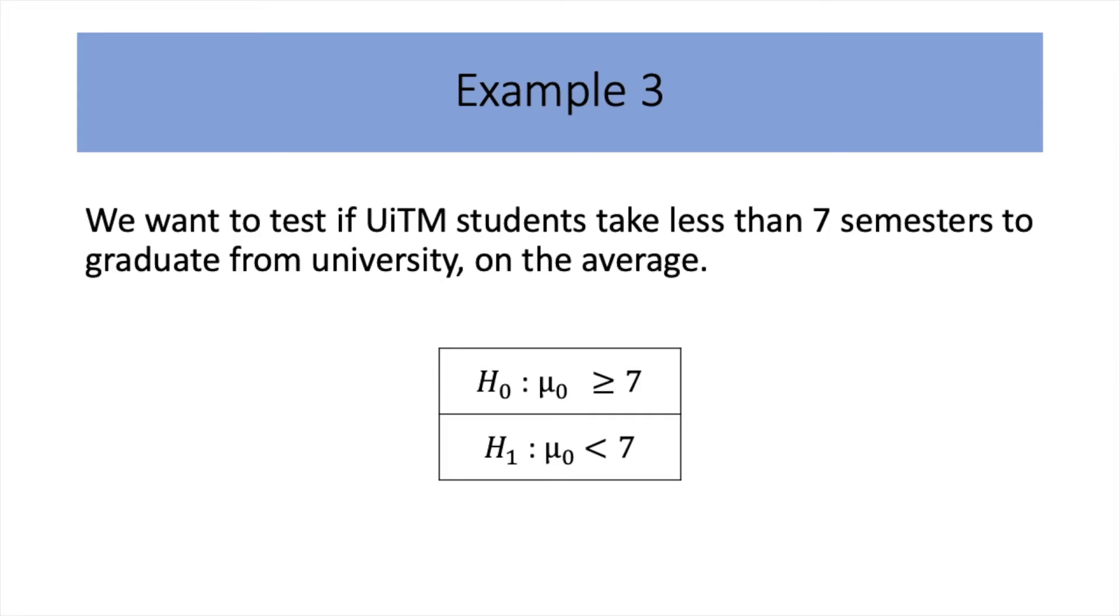For example 3, we want to test if UITM students take less than 7 semesters to graduate. So, you see, what we want to test is technically already representing your alternative. What we want to test on average.